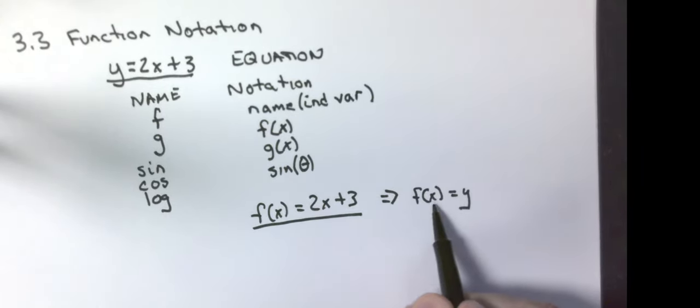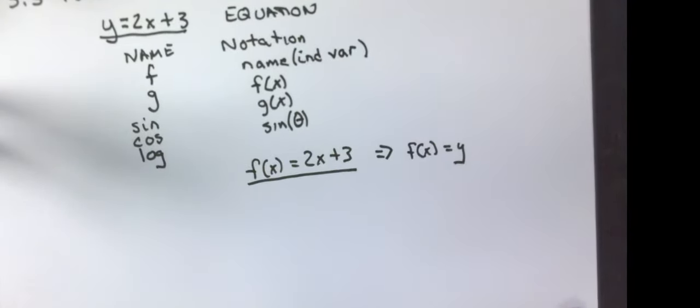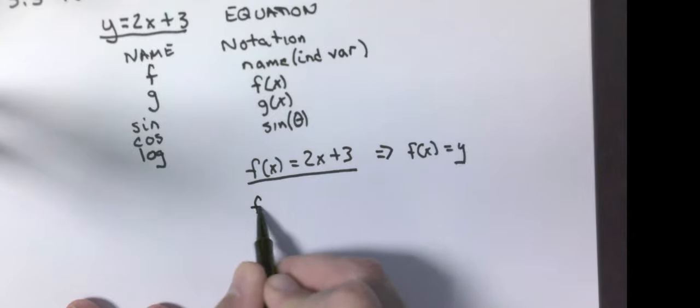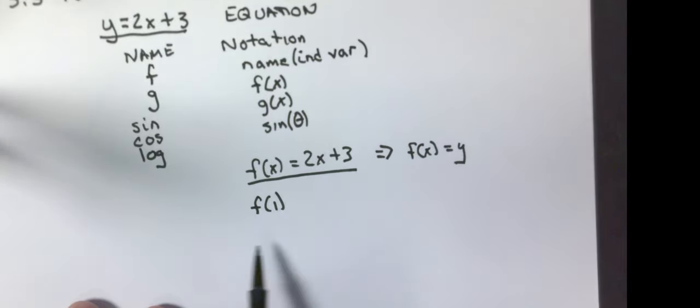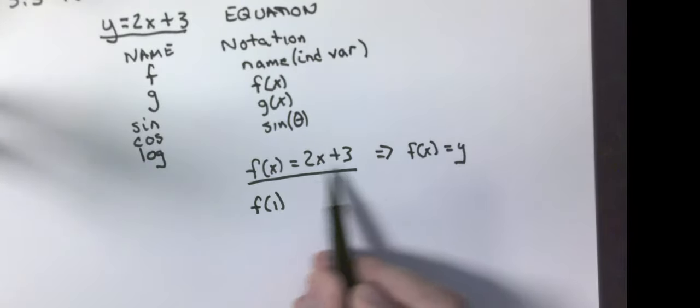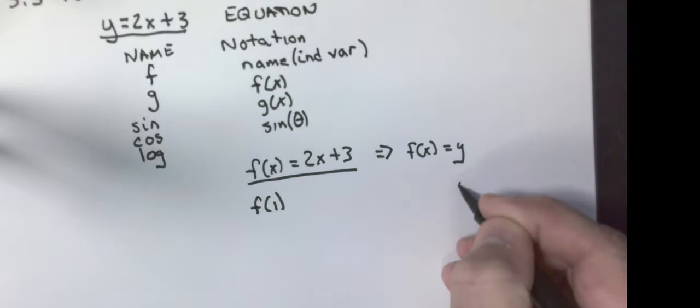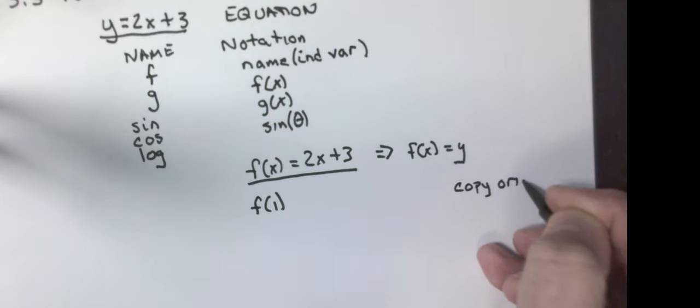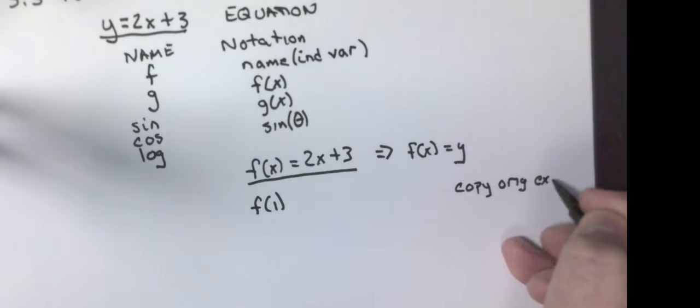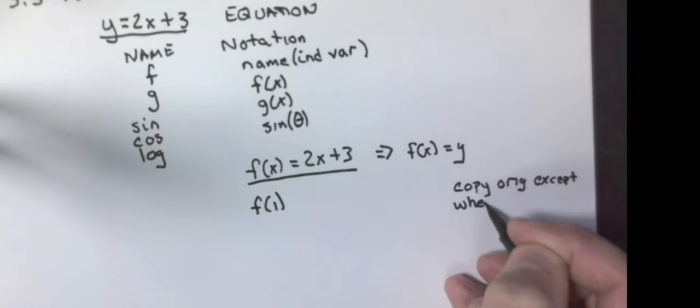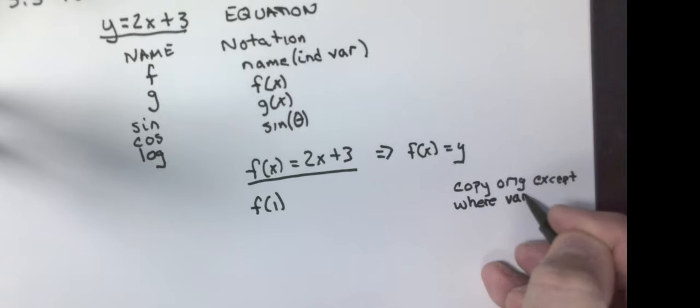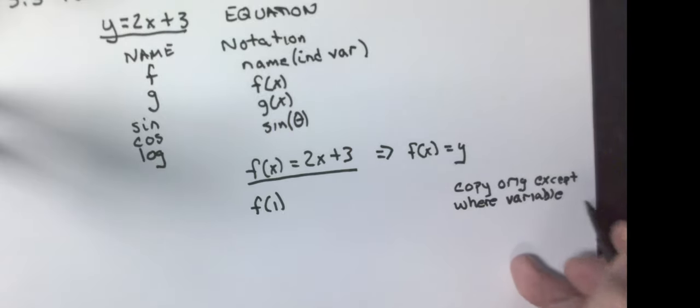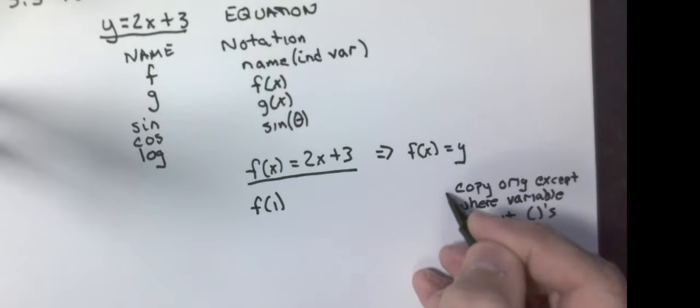Where whatever is inside the parentheses is going to be my x value. For example, if I were to do f of 1, what that is telling me to do is to copy down the original function, copy original, except where variable is, you put parentheses. That's going to be my first step.